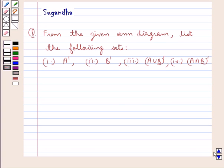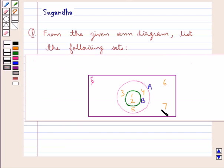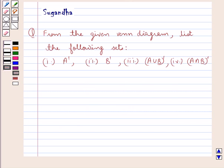Hello and welcome to the session. In this session we discuss the following question which says: from the given Venn diagram, list the following sets — A complement, B complement, A union B complement, and A intersection B complement. Before we move on to the solution, let's discuss the key idea to be used for this question.